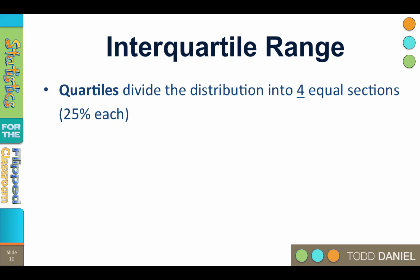One solution to the problem posed by the range is to instead use the interquartile range, abbreviated IQR. Quartile means quarter. To create quartiles of a data set, you divide the distribution into four equal sections, 25% each.